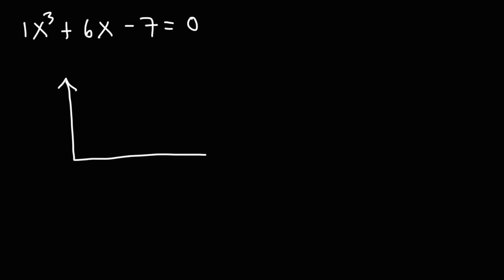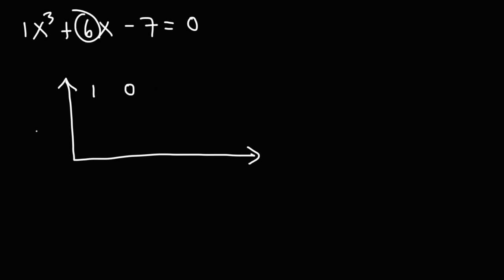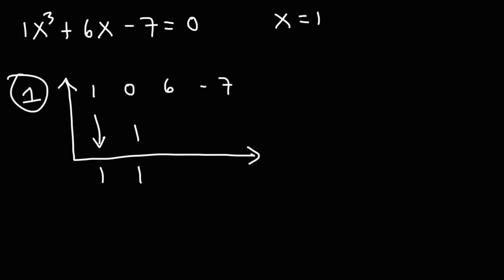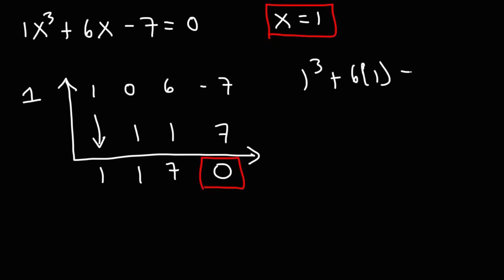Let's try x equals positive 1 using synthetic division. We write the coefficients of the equation: 1 for x cubed, 0 for the missing x squared term, 6 for x, and negative 7 for the constant. We put 1 in the test position and bring down the 1. Multiply 1 times 1 to get 1, add 0 plus 1 to get 1, multiply 1 times 1 to get 1, add 6 plus 1 to get 7, multiply 1 times 7 to get 7, and negative 7 plus 7 is 0. Getting a remainder of 0 means x equals 1 is a solution — plugging 1 into the equation gives 0.